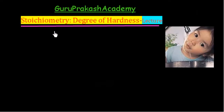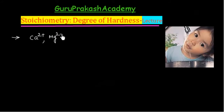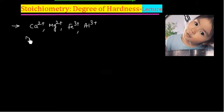In this lecture we will be discussing the degree of hardness of water. Water becomes hard when it contains Ca²⁺, Mg²⁺, Fe³⁺, or Al³⁺. If water contains any multivalent cation, water becomes hard. So hardness is due to the multivalent cation.